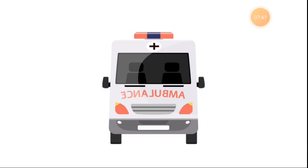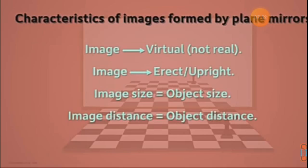So here are some characteristics of images formed by a plane mirror. Let's quickly review them. First, the image formed by a plane mirror is virtual and not real. Second, the image formed is always erect or upright. Third, the size of the image formed is the same as the size of the object. And lastly, the image formed is at the same distance from the mirror as the object is.